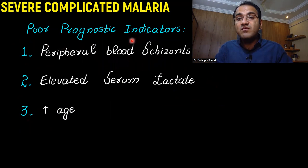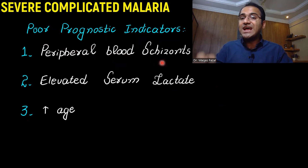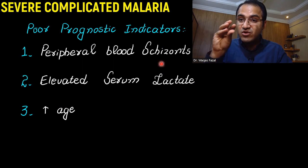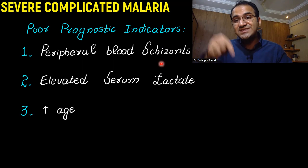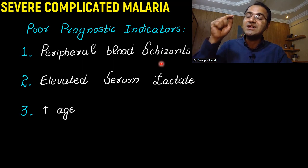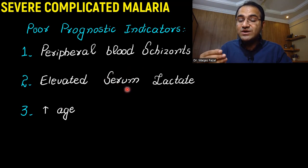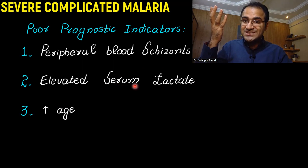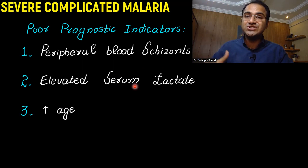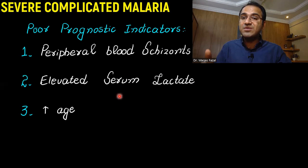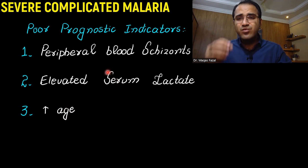Poor prognostic indicators of malaria include peripheral blood schizonts. Malaria proliferates and replicates in the red blood cells, forming schizonts. The presence of schizonts in red blood cells is a poor prognostic factor, meaning these RBCs are going to rupture due to Plasmodium replication. Elevated serum lactate indicates acidosis is taking place — since there is hemolytic anemia and destruction of RBCs, normal glucose metabolism is disturbed, causing lactic acid buildup due to hypoxia to peripheral tissues. Increased age is the third poor prognostic indicator.